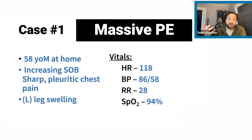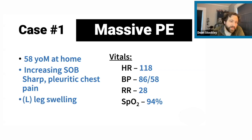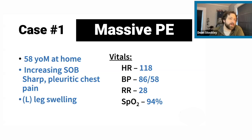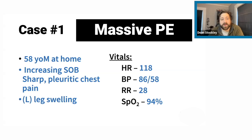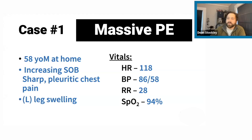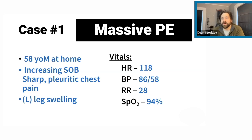Some agencies do carry ultrasound. The demarcation line finding in massive PE is super rare and almost always found post-mortem — it's almost always someone who died of massive PE. It's not generally something we'll see in the field, but it's a finding associated with very significant PE, similar to how tracheal deviation in tension pneumo is almost always a late, post-mortem finding.